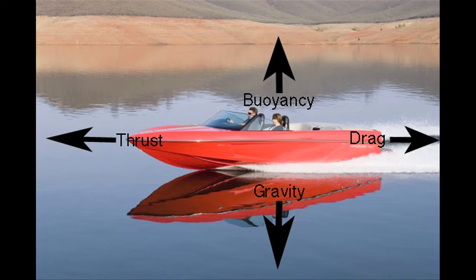The forces of motion also play a key role in how a floating object behaves. These forces, like thrust and drag, play a part in where the center of gravity is, and therefore the location of the center of buoyancy.